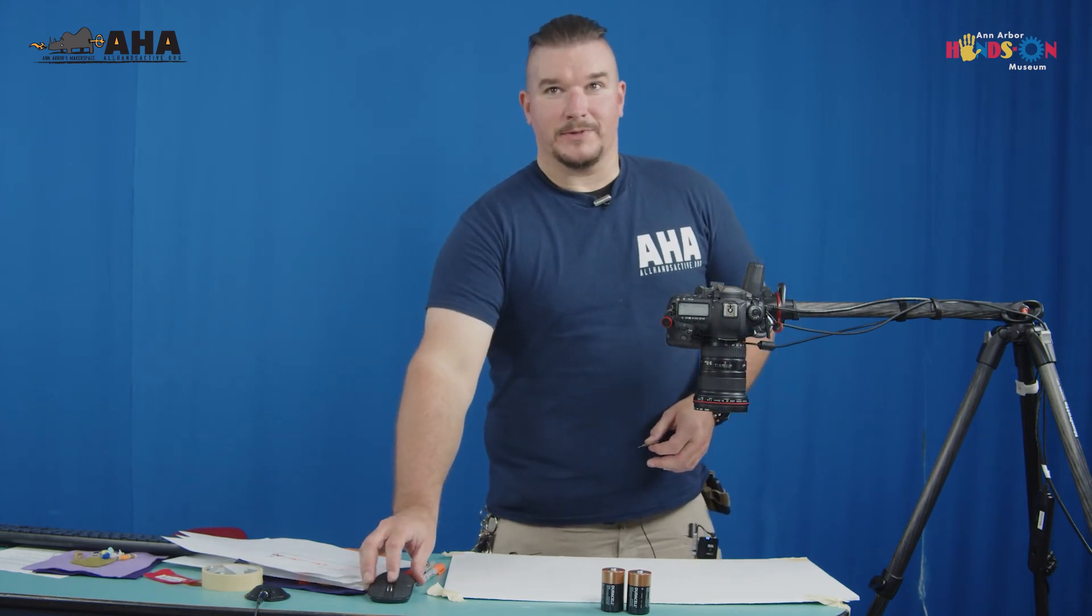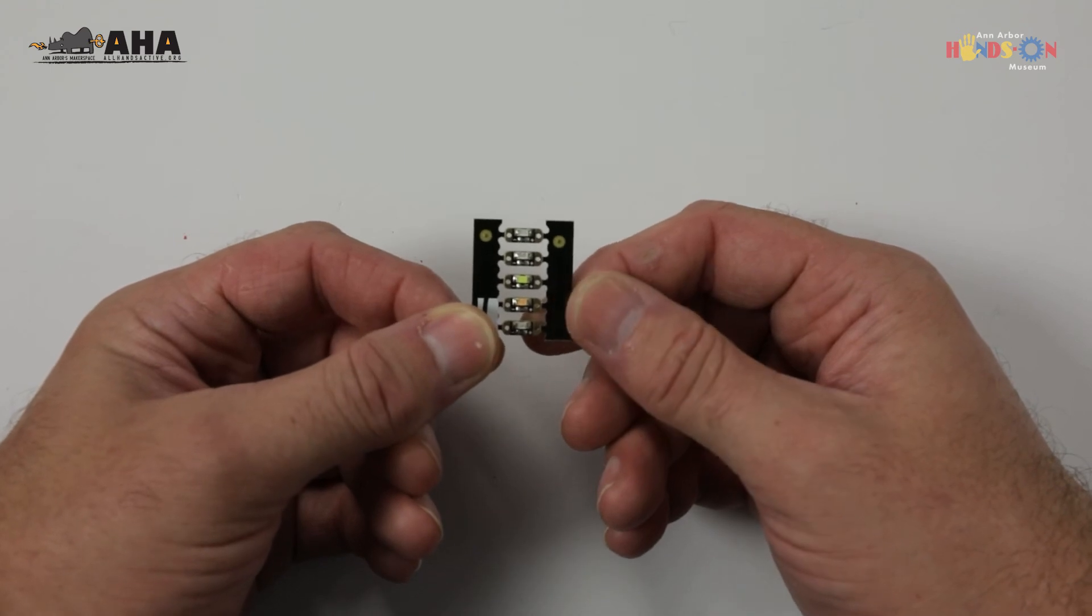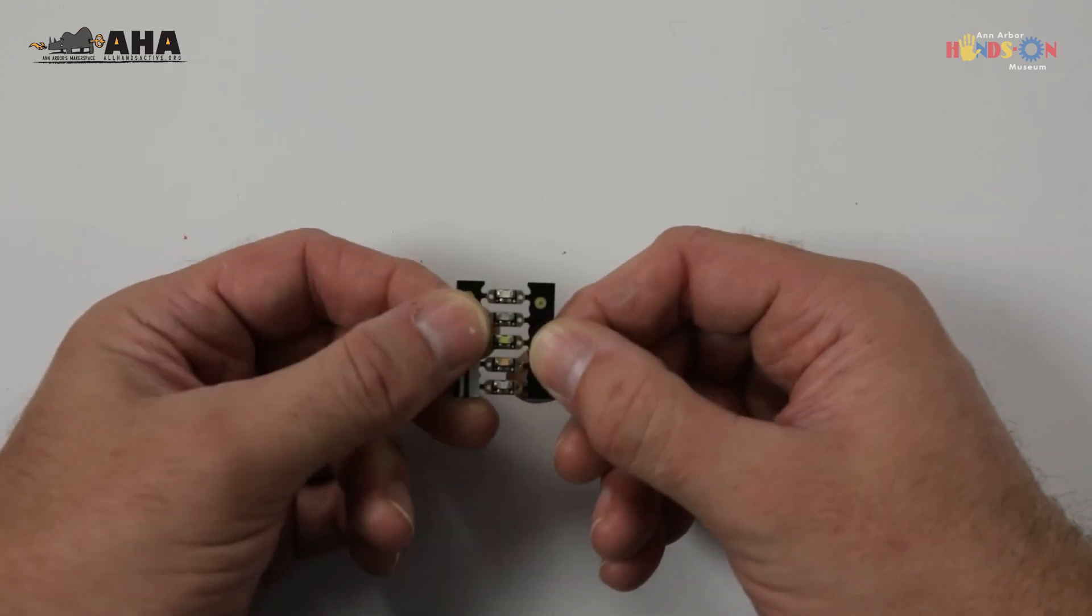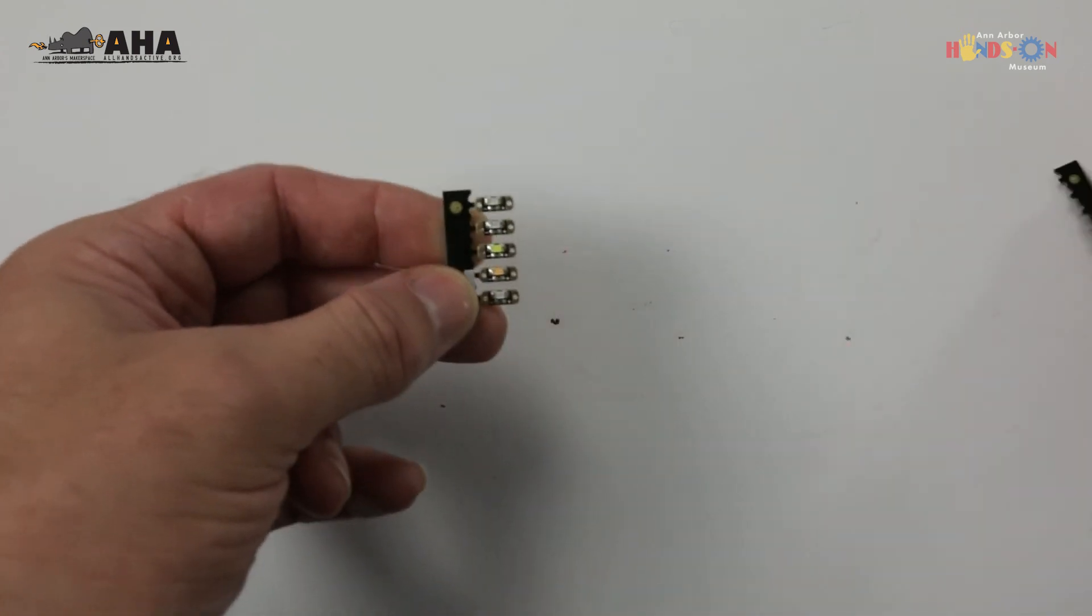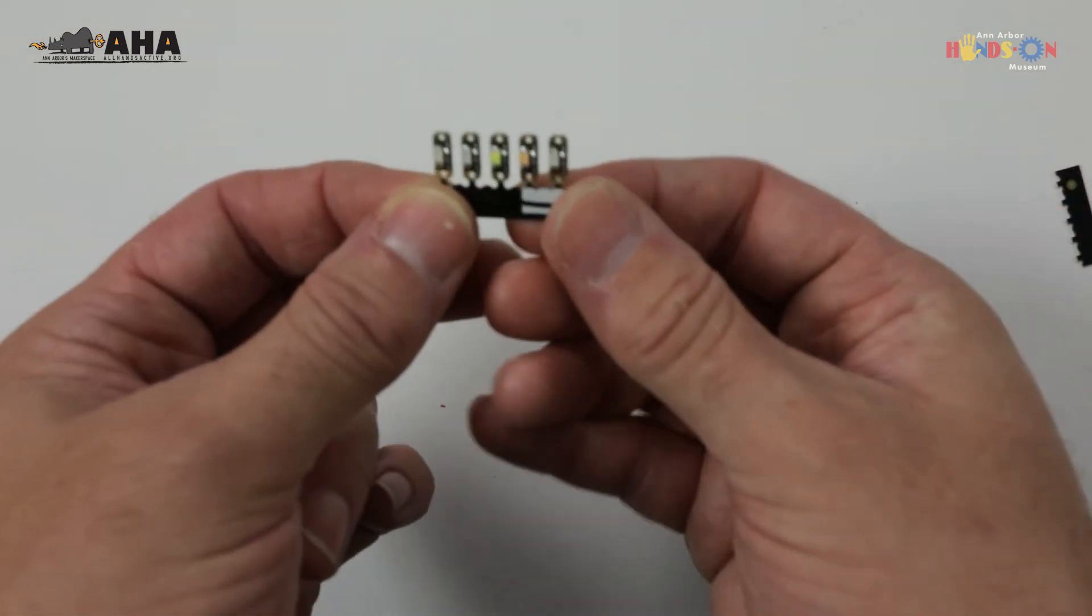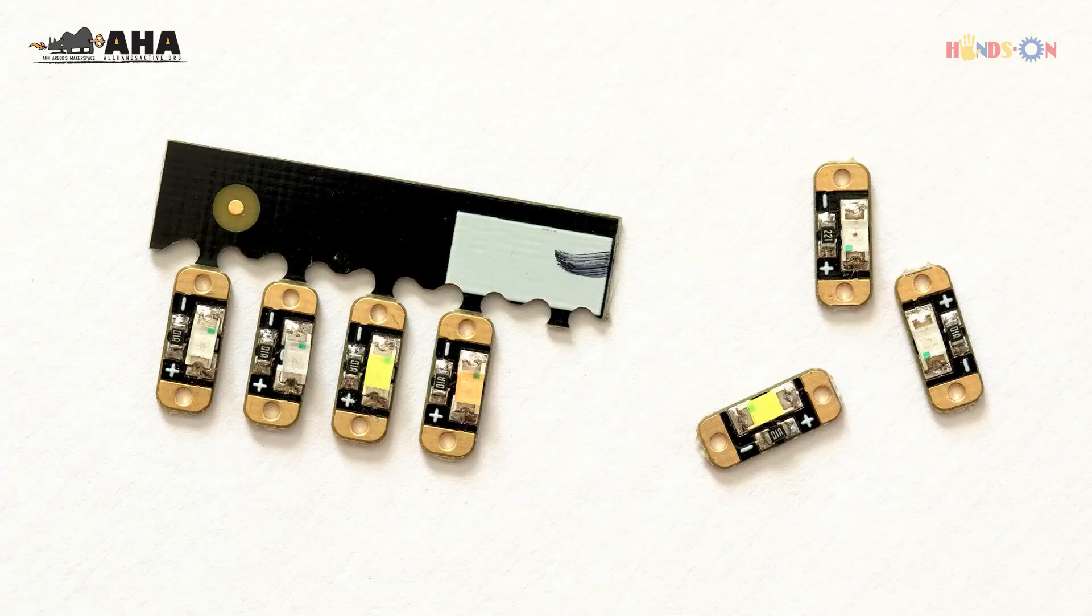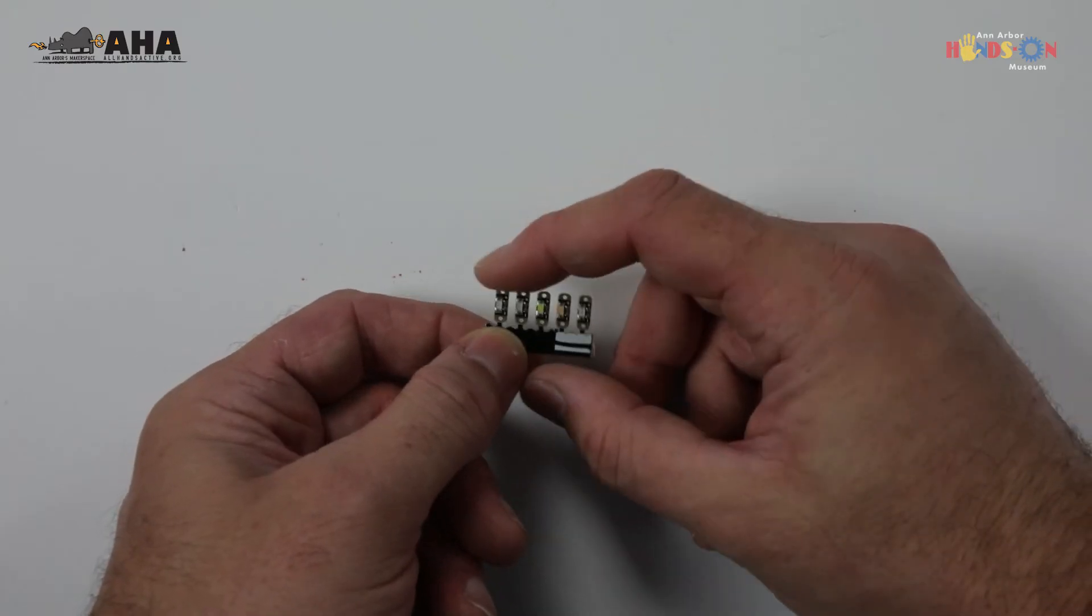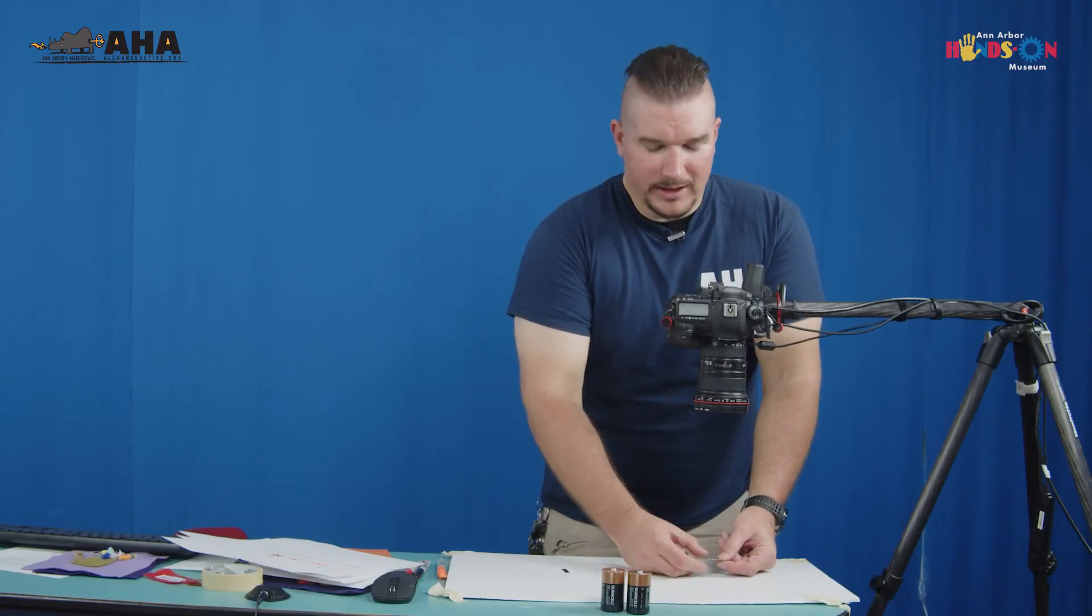So here we have the LEDs—they come to you on this sort of ladder looking board and we're going to of course break off one side so we can actually get them off of here. If you look very closely you'll see that there's a positive side with a plus there and a negative side with the minus or the negative sign. So the positive should go to the positive side of your battery, the negative should go to the negative side of your battery. LEDs are very particular about that.